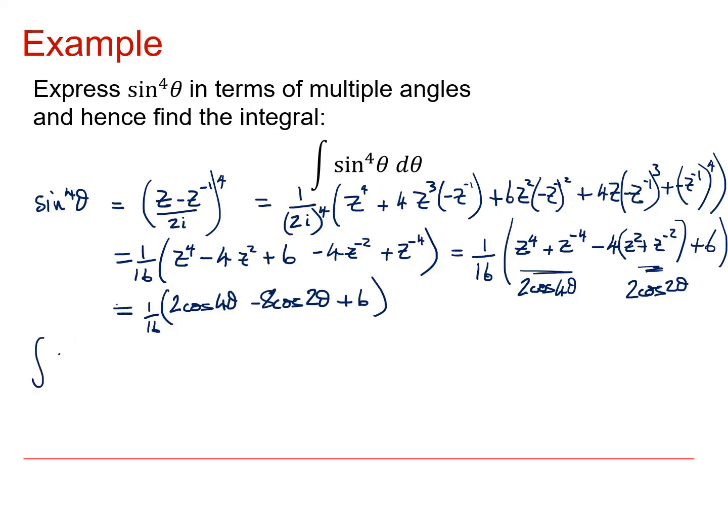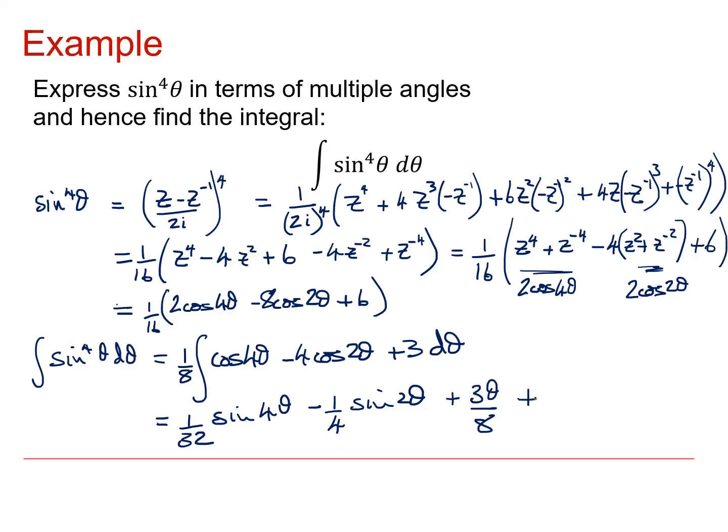And so my integral of sin to the power 4 theta d theta is just the integral of this thing. Well, notice I can cancel a 2 out of all of this. So it's actually going to be 1 eighth of the integral of cos 4 theta minus 4 cos 2 theta plus 3. Now when I integrate cos 4 theta, I get sin 4 theta over 4. So I get 1 over 32 sin 4 theta. And then I get from the integral of cos 2 theta, I get sin 2 theta over 2. So I get minus 1 over 4 sin 2 theta plus 3 theta over 8 plus a constant.